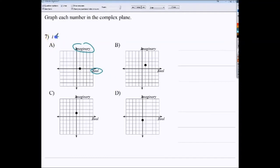Now this one says i, or you could write i plus 0 if you want to. So on the real axis, it doesn't go anywhere. It doesn't go left or right. But on the imaginary axis, it goes up 1 because it's positive 1. So you're looking for a dot that's right there, and that answer is c.